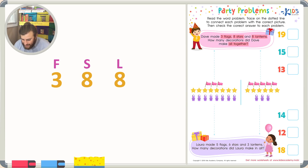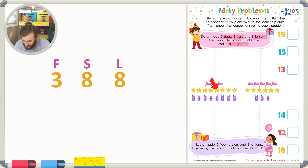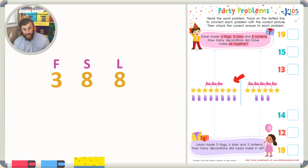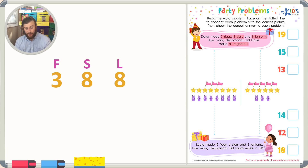I can see right here there's three flags, so I'm already starting to think that this picture is the correct one. I know there's eight stars, so let's count the stars — one through eight. I also know there's eight lanterns, so let's count the lanterns — one through eight. So this must be the correct picture. Let's trace on the dotted line.